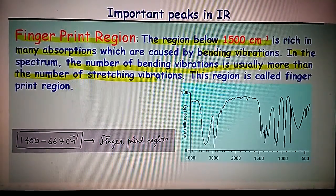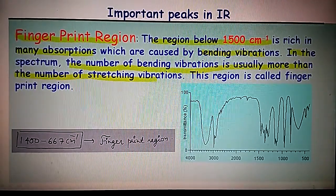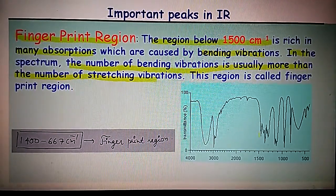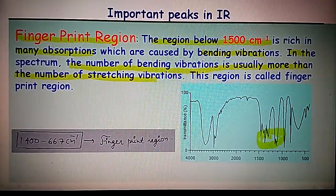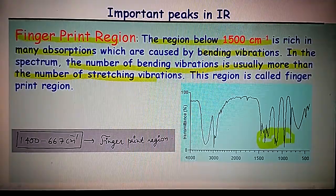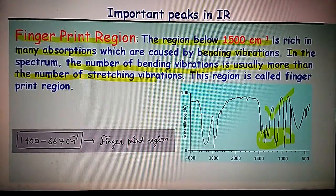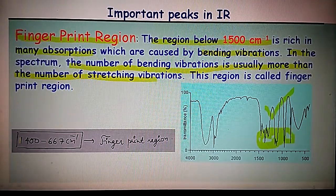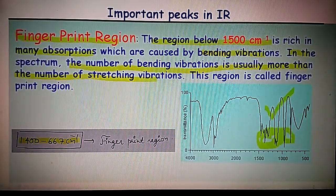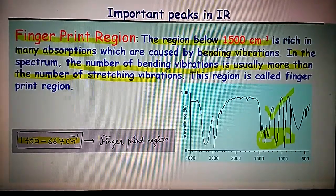This region with more and more absorption peaks is known as the fingerprint region. The main range of the fingerprint region starts from 667 cm⁻¹ to 1400 cm⁻¹.